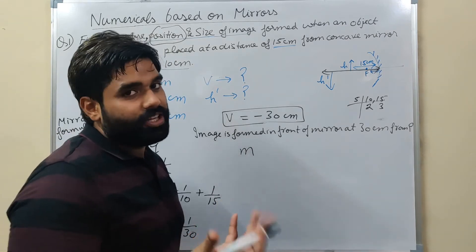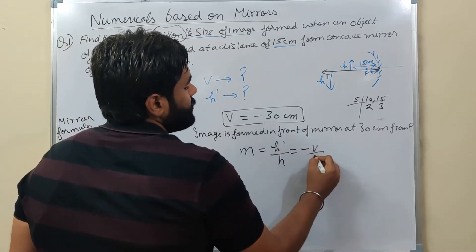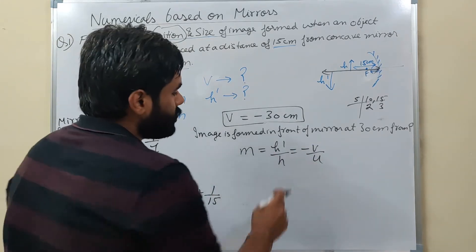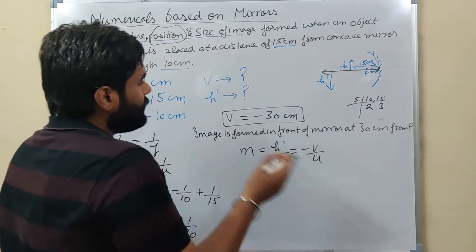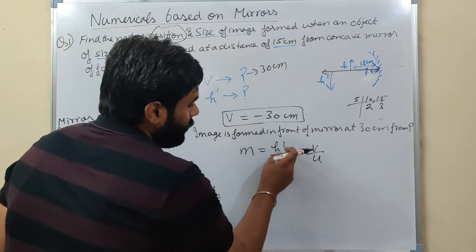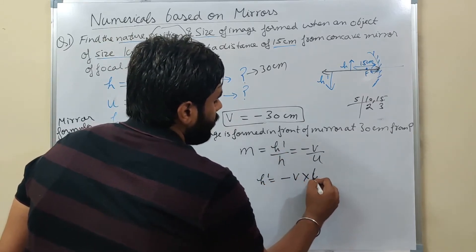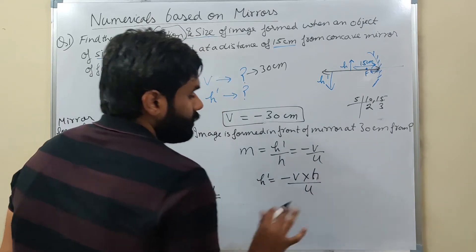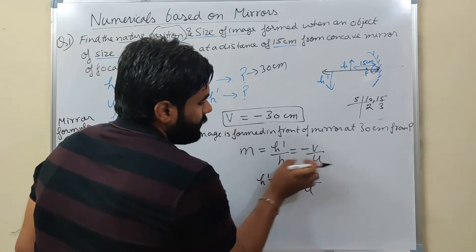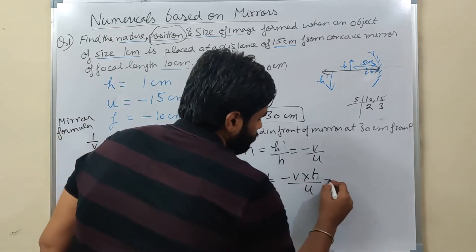For nature and size, magnification formula: m = h-dash/h = -V/U. These two are equal to each other. Magnification is not given in the question, but h is given, V is found, U is given. So you can easily find h-dash. h-dash = (-V × h) / U.